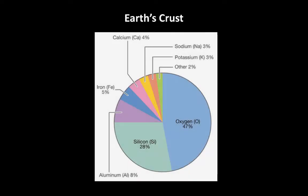For example, Earth's crust is primarily oxygen, silicon, aluminum, iron, calcium, sodium, potassium, with the other 100 elements making up only 2% of the Earth's crust.